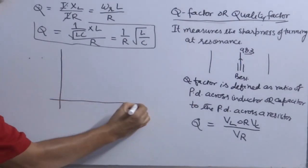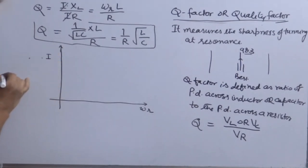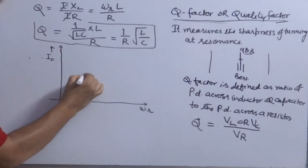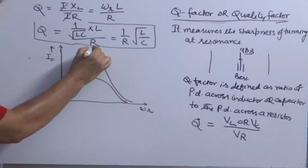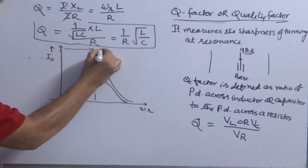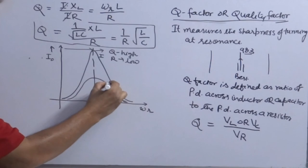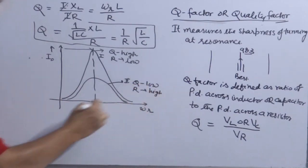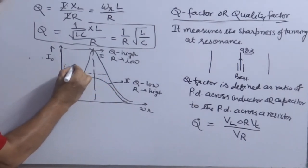So quality factor is playing a very important role in this respect. Now how to calculate quality factor of a given LCR circuit? So formula for calculating Q factor, I am giving you mathematical definition, as the ratio of potential difference across inductor or capacitor to the potential difference across resistor. So Q factor is equal to potential difference across inductor or potential difference across capacitor divided by potential difference across resistor.